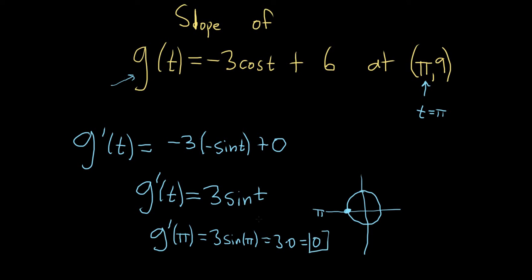And so that would be the slope of the function at pi, 9. Or in other words, the slope of the tangent line to the graph of the function at pi, 9. Or in other words, the derivative at pi.